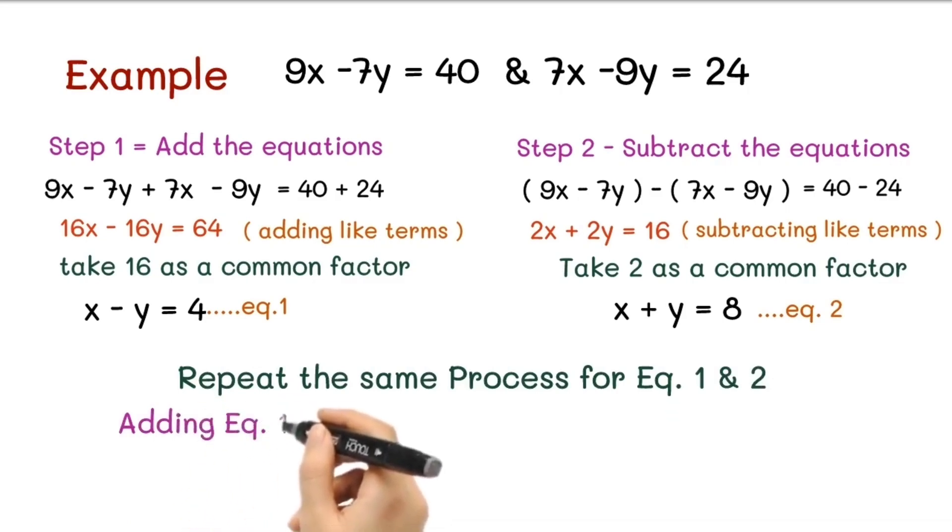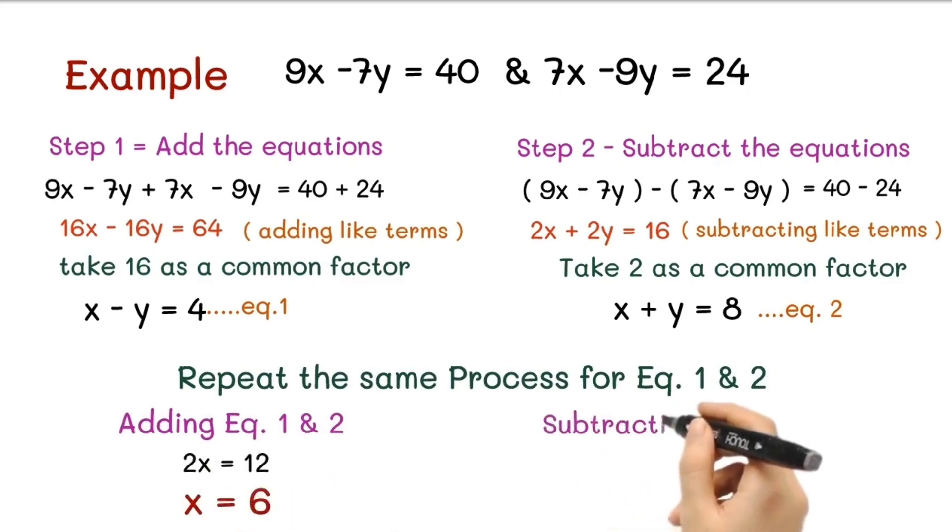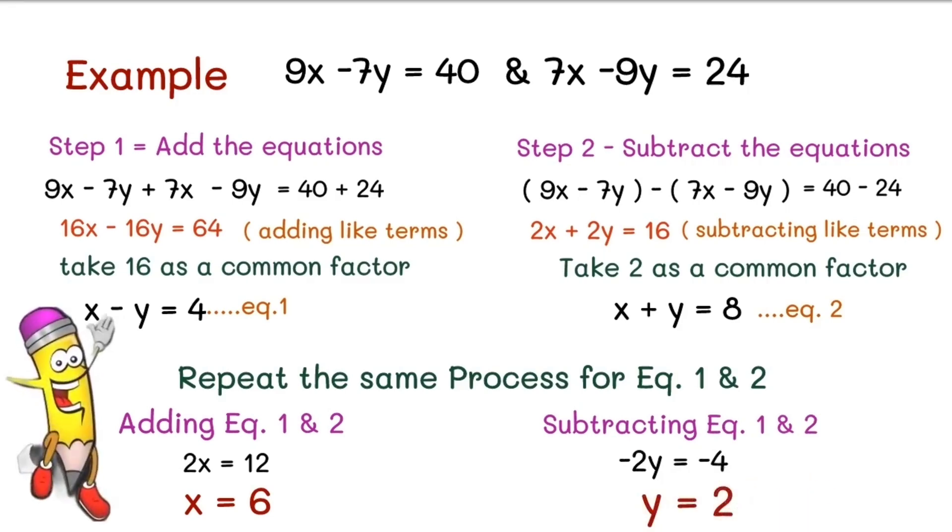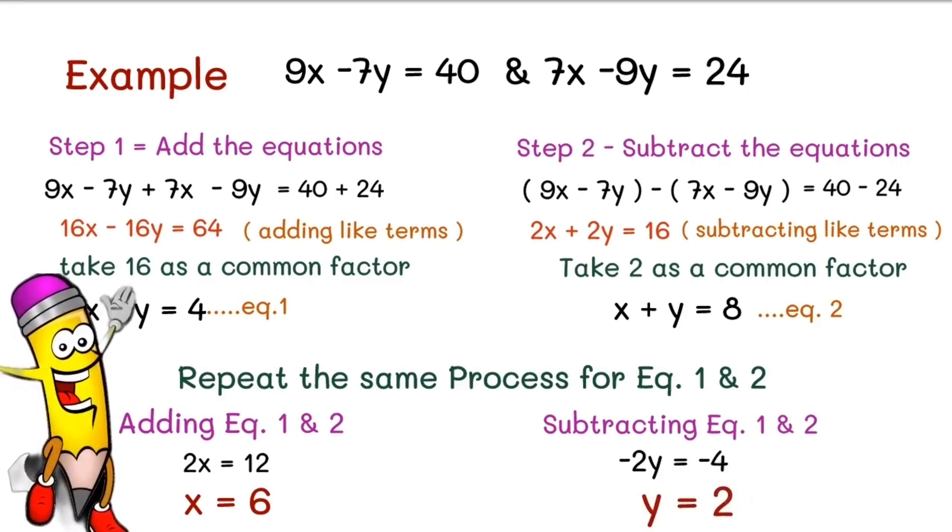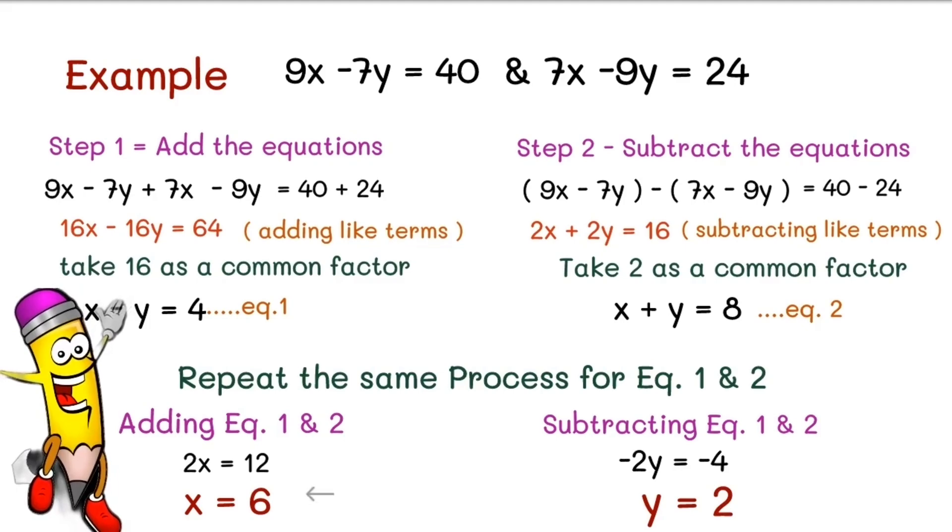By adding equations 1 and 2, we get 2x = 12, that is x = 6. And by subtracting equations 1 and 2, we get -2y = -4, that is y = 2. So in this way we got the solution of the equation: x = 6 and y = 2 by using Vedic Math Sutra 7.